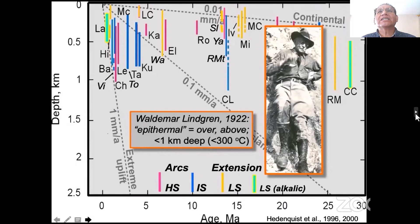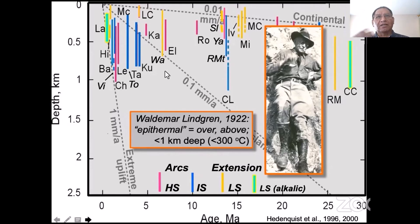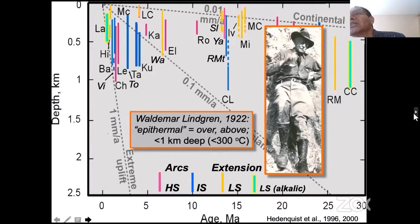Wildermar Lean Green, 1922. Epithermal means 'above' or 'over.' The definition says: depth less than one kilometer, temperature of formation less than 300 degrees Celsius. In this case, we see low sulfidation, alkalic, intermediate sulfidation, and high sulfidation at the bottom edges of the mineralization. At the top we see depth in kilometers — 0.5, 1 kilometer. So they plotted all these deposits and figured out that less than one kilometer in depth and less than 300 degrees Celsius temperature of formation.